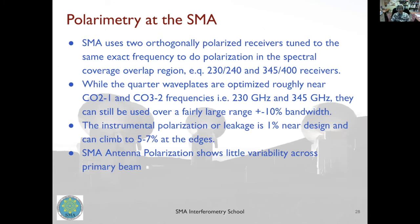Different quarter-wave plates are used for the two bands, optimized near the CO 2-1 and CO 3-2 transitions at roughly 230 and 345 GHz. They are broadband and can be used within plus or minus 10 percent bandwidth, so polarization observations are possible from about 210 to 250 GHz for the 230 GHz band, and similarly for the 345 GHz band. Instrumental polarization is about one percent near the central frequency but can climb to five to seven percent at the band edges.